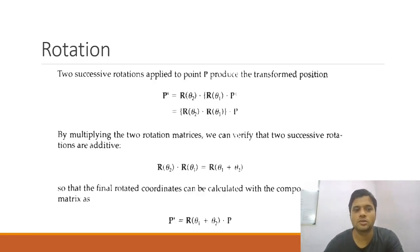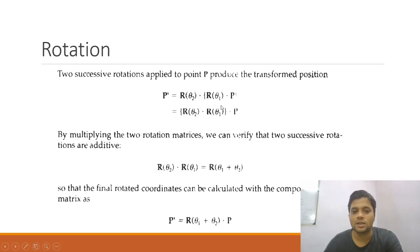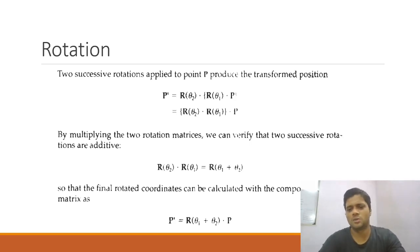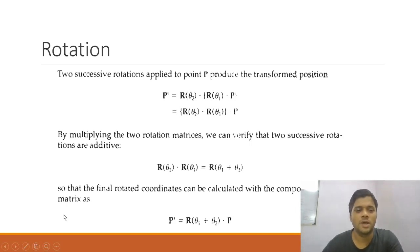The same applies to rotation. If two successive rotations are applied to point p, then p' has the object matrix on the rightmost side, pre-multiplied by the first rotation matrix with angle theta1, and that pre-multiplied by the second rotation matrix with angle theta2. By multiplying the two rotation matrices, we can verify that two successive rotations are additive.